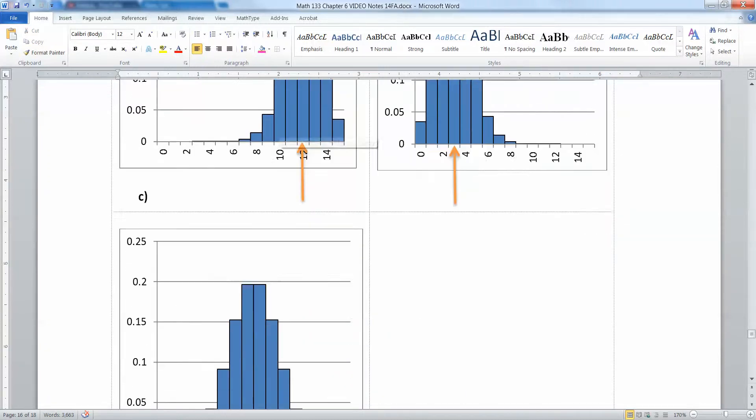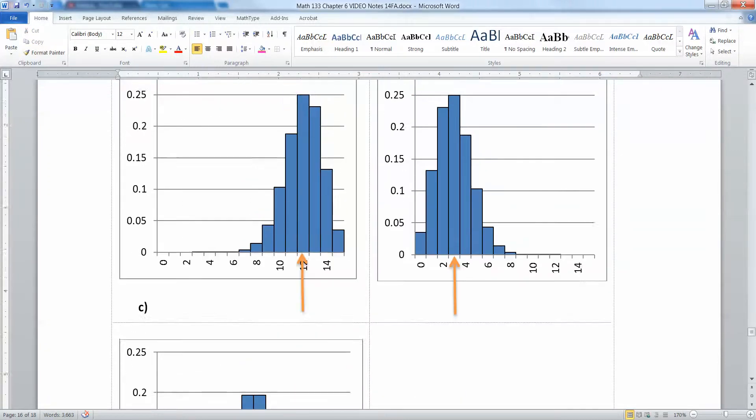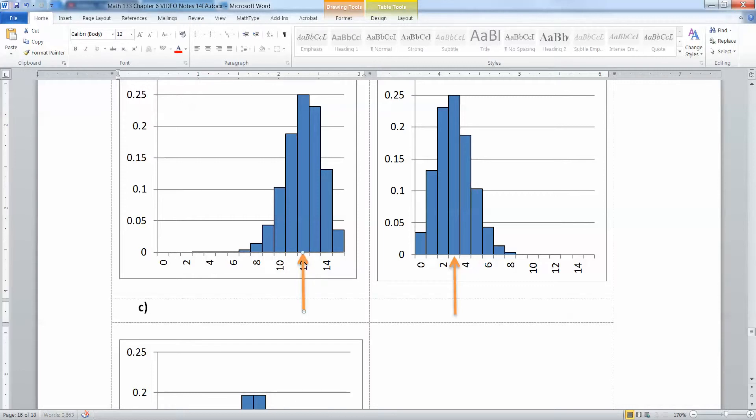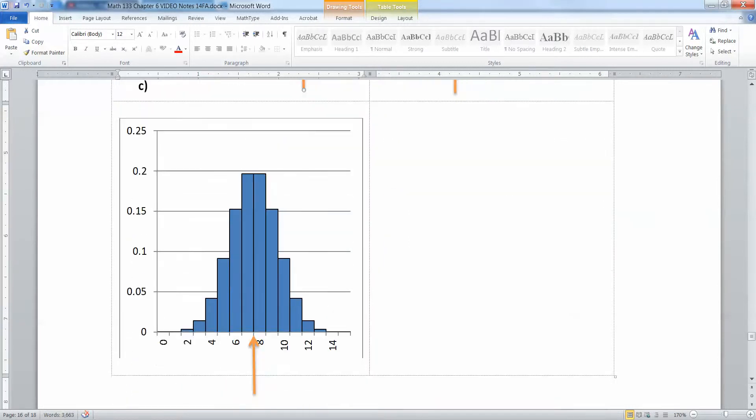Okay so I put little arrows here to show you where the mean would be. The mean being your balance point. So you can see this one would have a balance point somewhere in the 12 region, this would have someone in the 3 region and so on. Whereas this one down here because it's so symmetrical, it'd be right smack dab in the middle right at that line.